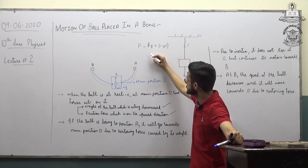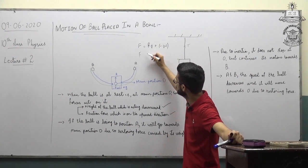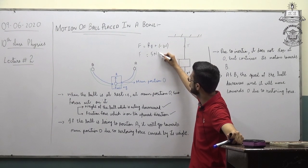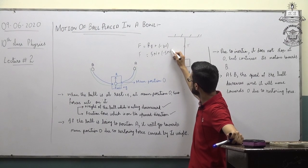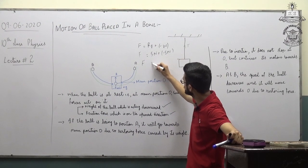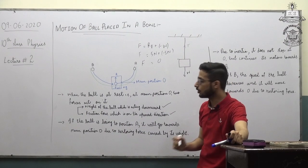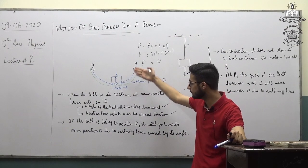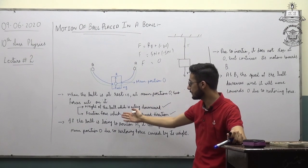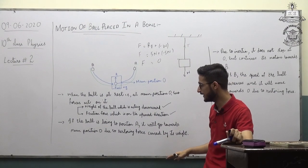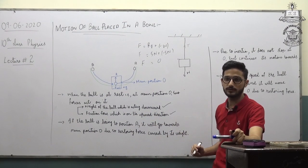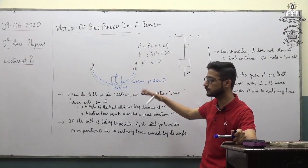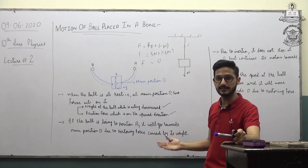If the magnitude of both forces is the same — for example, reaction force is 5 Newtons and weight is also 5 Newtons — then the net force will be zero. So the ball is at rest at the mean position because both forces — weight acting downward and reaction force acting upward — are opposite in direction and cancel each other's effect.